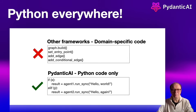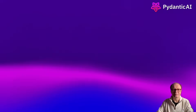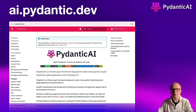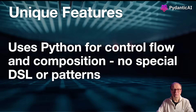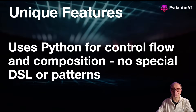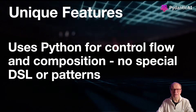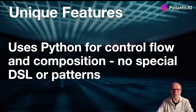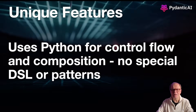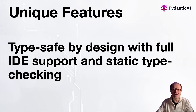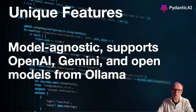Pydantic AI uses plain Python to control the flow of agent data. There is no need for domain-specific code or extra classes. You can get more information and read the wonderful documentation at ai.pydantic.dev. The framework leverages Python's control flow and agent composition to build any AI-driven project, making it easy to apply standard Python best practices. It is designed to make type checking as useful as possible, so it integrates well with static type checkers like MyPy and PyRight. It supports OpenAI, Anthropic, Gemini, Ollama, Grok, and Mistral.